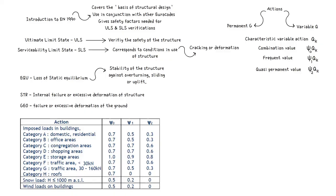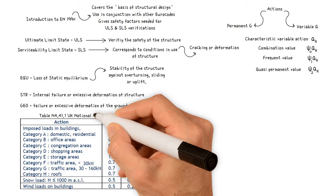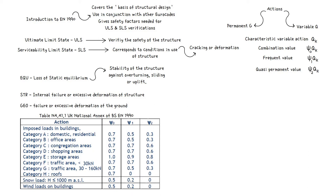We have different ψ combination factors for different load situations, which we can get from the UK National Annex table A1.1. When we need to consider combinations of actions, there are two options available.